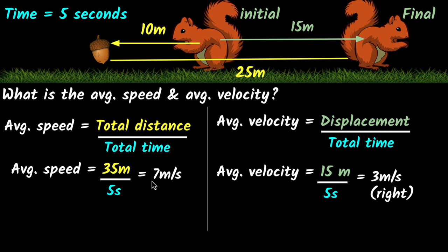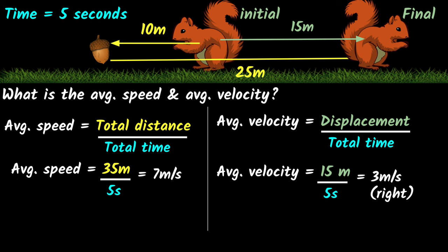Here's an important point about average values. When we say the squirrel's average speed is seven meters per second, it does not mean the squirrel traveled exactly seven meters every second. It's entirely possible the squirrel traveled the first 10 meters in one second and the remaining 25 meters in four seconds. The word 'average' means: assuming the speed was constant throughout, the rate would be seven meters per second. The same applies to average velocity — it assumes constant velocity.